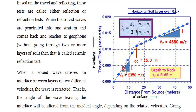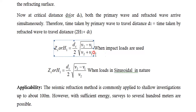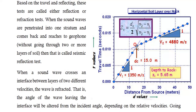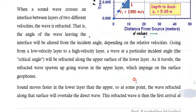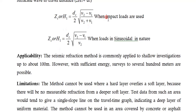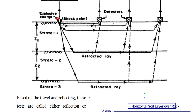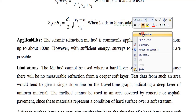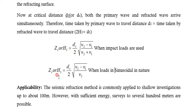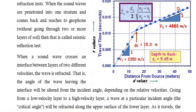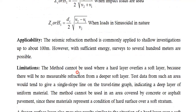The slope of the travel-time vs. distance graph is time/distance = 1/v, so the inverse slope gives velocity. v1 and v2 are thus obtained from the slopes of the respective line segments. dc is the distance at which the two slopes intersect. Substituting v1, v2, and dc into the equation gives h1. This method is used when impact loads are applied. If sinusoidal waves are used, a different equation applies. If there is another strata, a third slope appears, and you can similarly calculate h2.